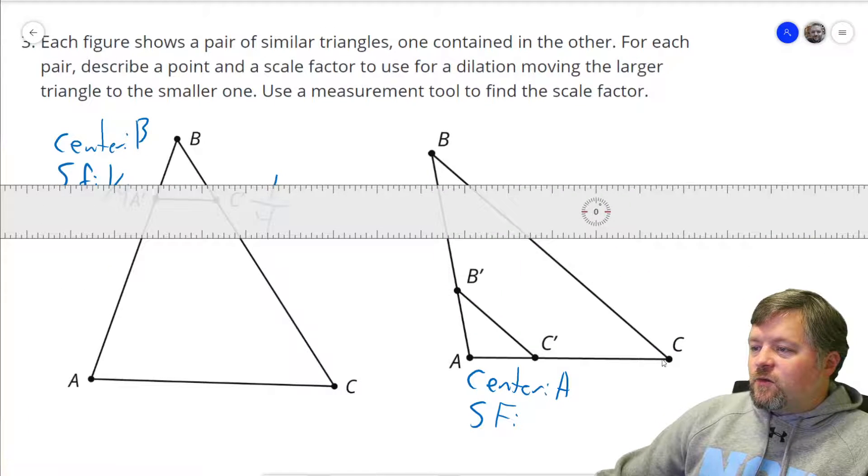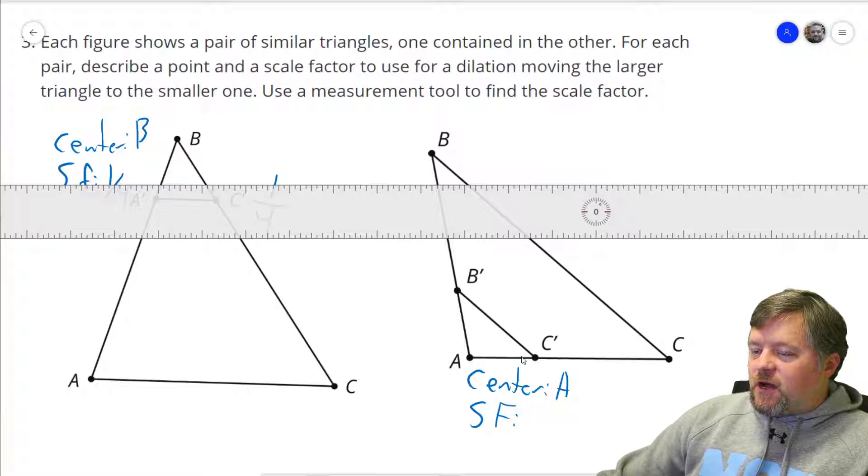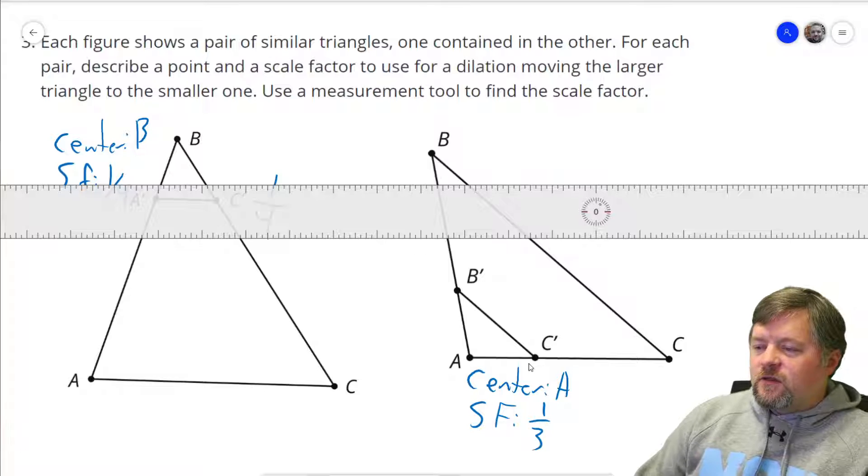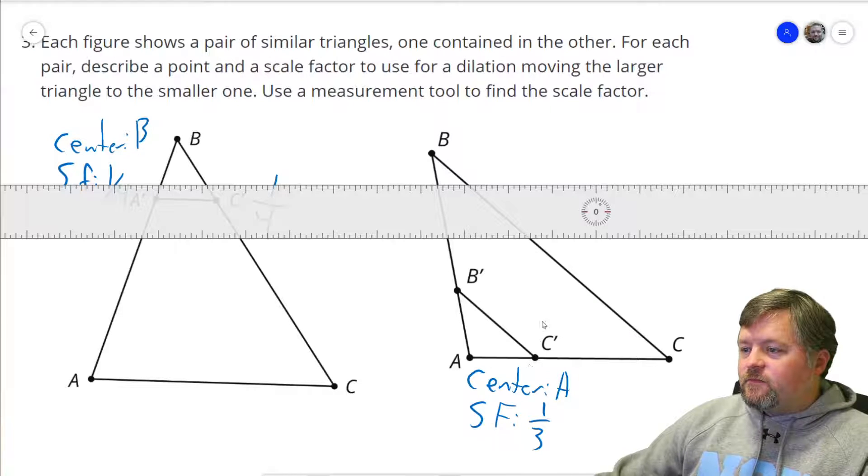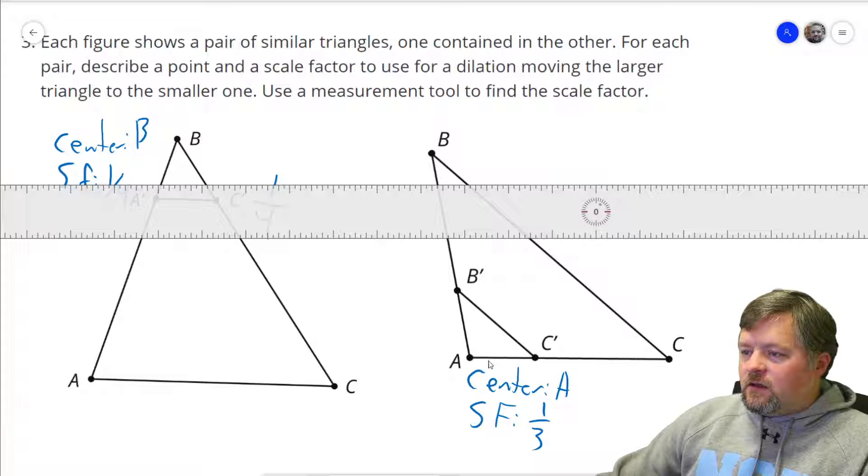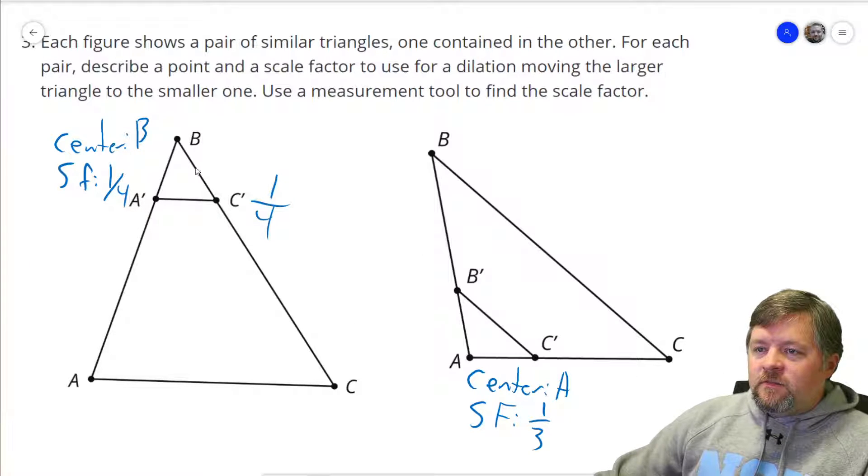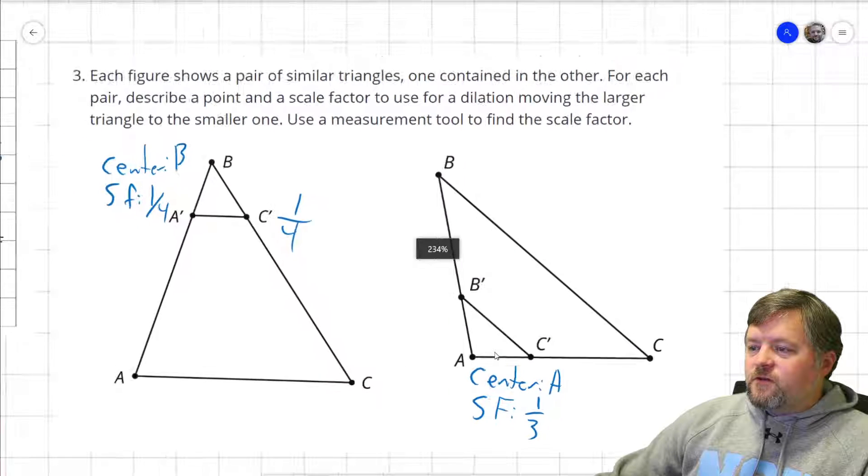So what do we multiply 36 by to get 12? One-third. This is one-third of the total distance. This one is one-fourth of the total distance. And that's our last problem on this one.